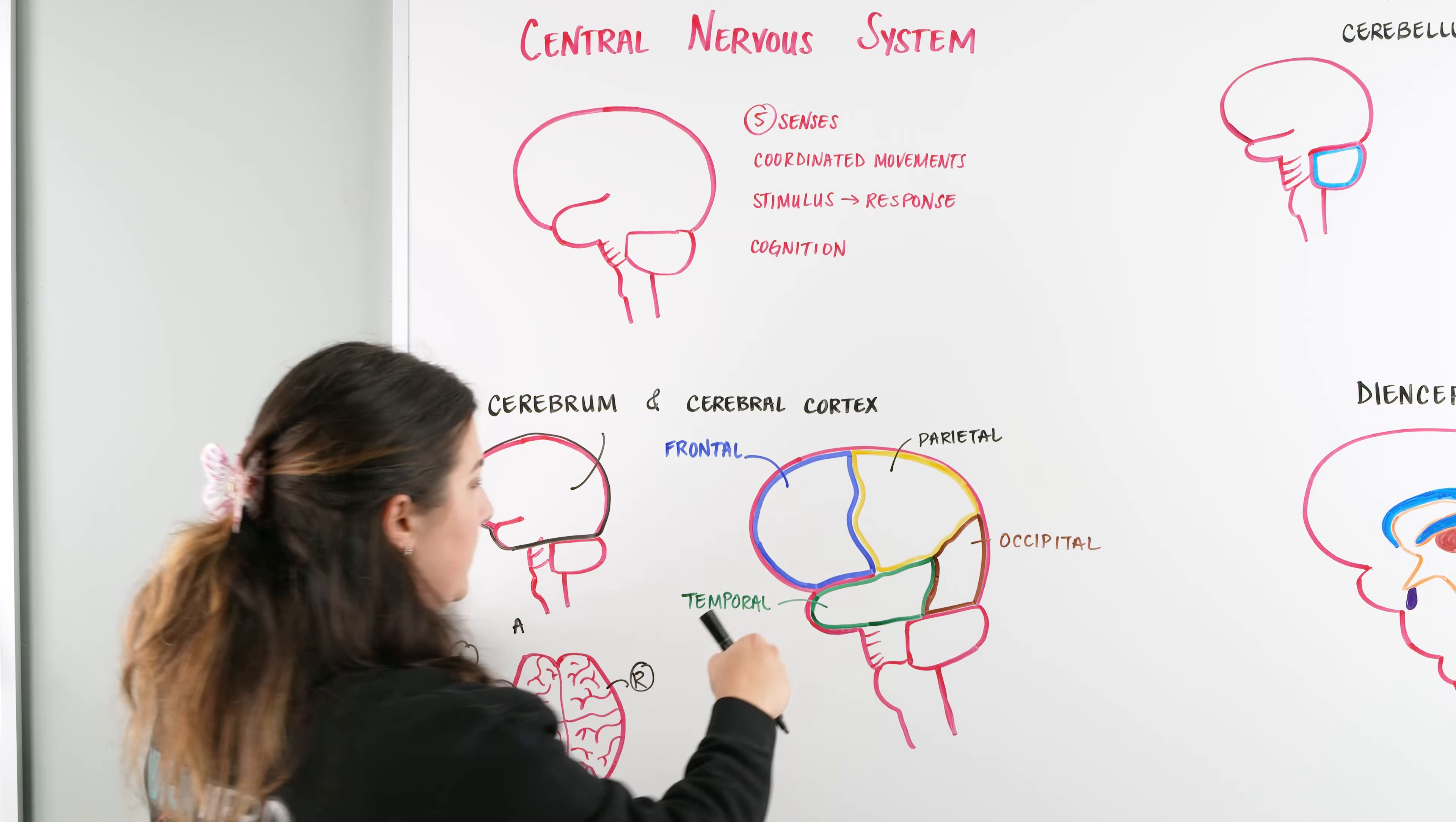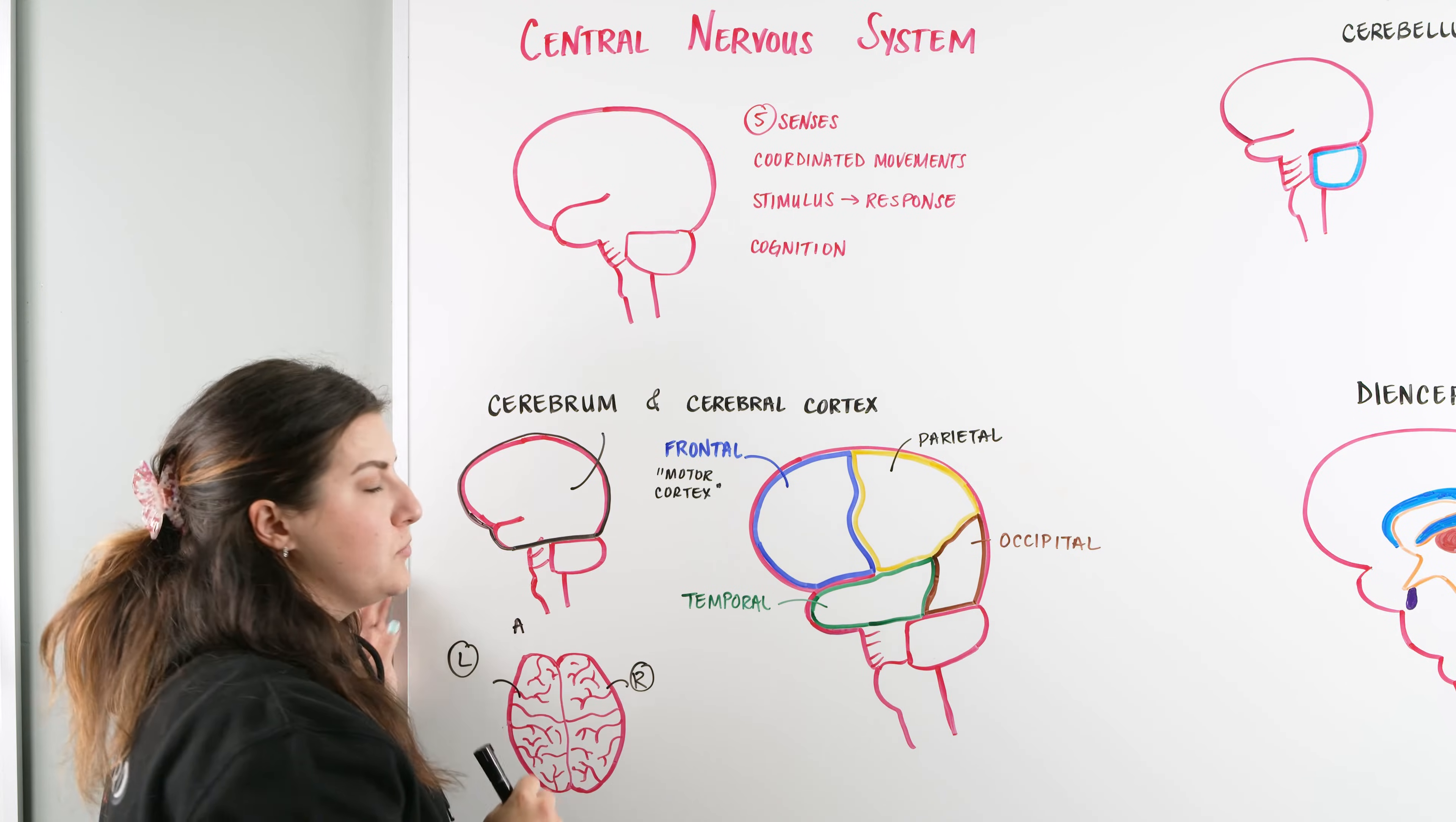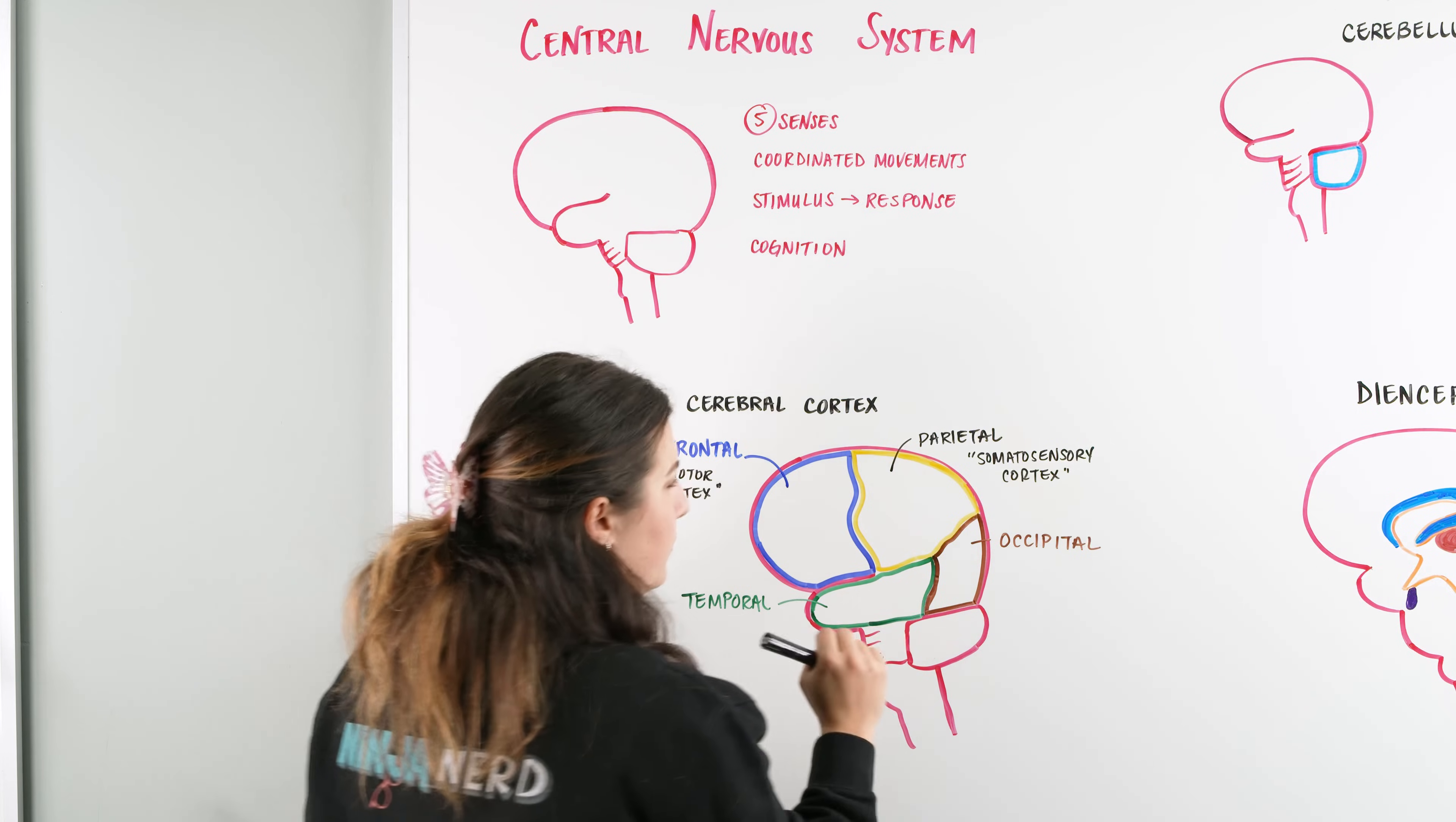When we're looking at the frontal cortex, this is where our motor cortex is. This is where we think about movement and initiate stimulus and movement. Our parietal is where our somatosensory cortex is. This is where we take in information and figure out what it is. We get texture, pressure, and temperature all coming through our parietal.